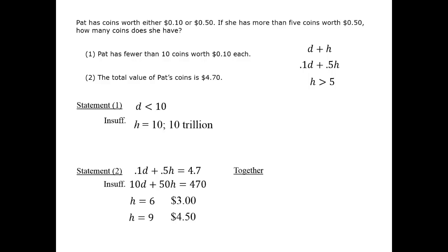If the total is 4.70, and the total number of dimes is fewer than 10, then dimes are contributing less than $1, and half dollars must contribute at least 3.70. But half dollars come in multiples of 50 cents. That would appear to leave two possibilities. The half dollars add up to $4, or they add up to $4.50. Both cases are still allowed, and they lead to a different total number of coins. So we still don't have sufficient information to answer the question definitively. Therefore, the correct answer is E.